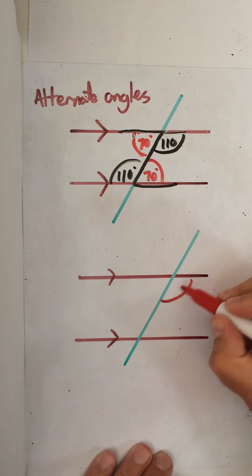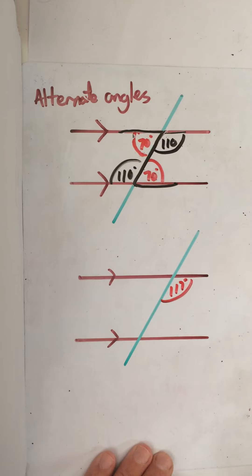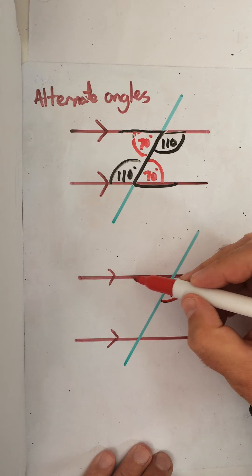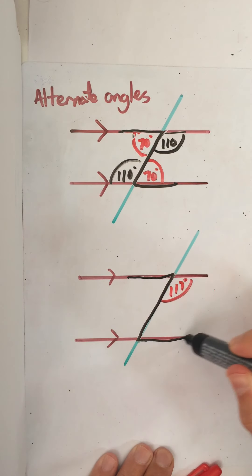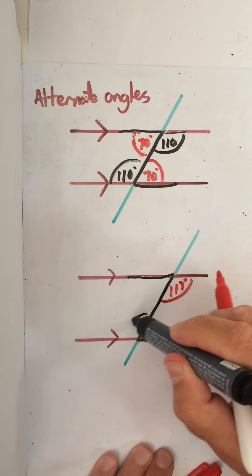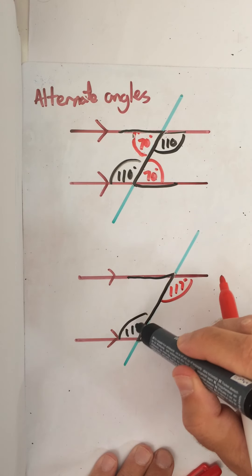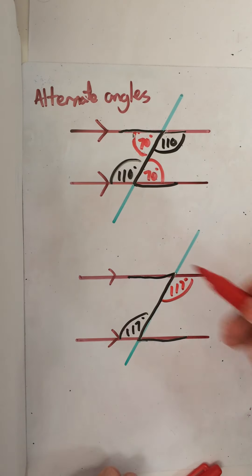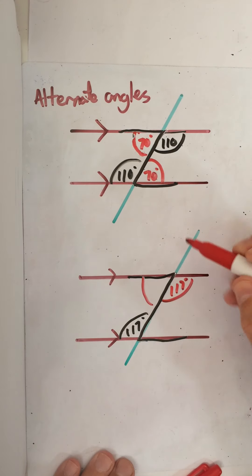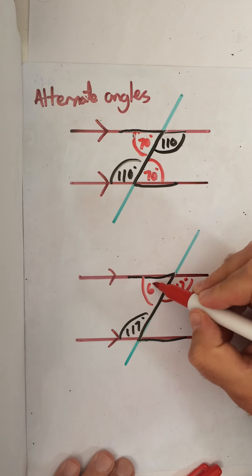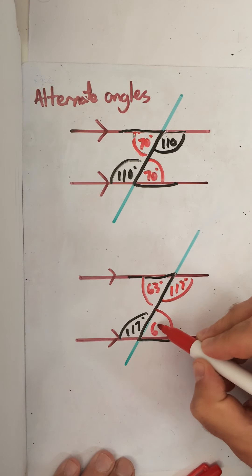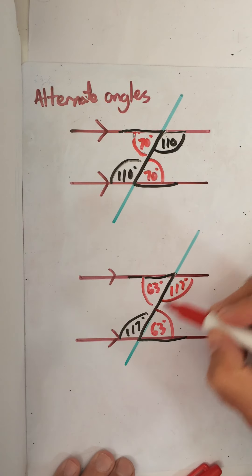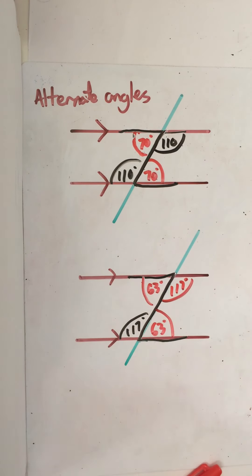So if you were given that this angle was 117 degrees, you would know straight away — I've got my Z along the parallel lines — so alternate angles are also 117 degrees. This angle then would be 63 degrees, because these two are going to add up to 180. So this angle here is also 63 degrees — alternate angles along the parallel lines.